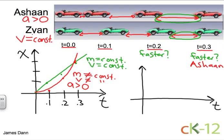So I'll put velocity here on the y-axis and time on the x-axis. Well, Zion is going at a constant velocity, so therefore, as time moves forward, his velocity stays the same. So it's just a straight horizontal line.